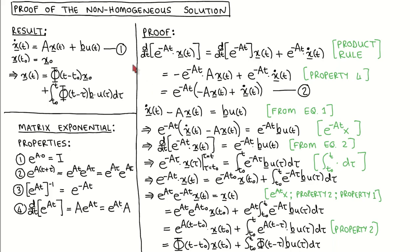To get to the intermediate result, we start by taking the time derivative of the matrix exponential of minus At times x. We use the product rule for differentiation, which says that the derivative of a product of two functions is the derivative of the first function times the second function plus the first function times the derivative of the second function.